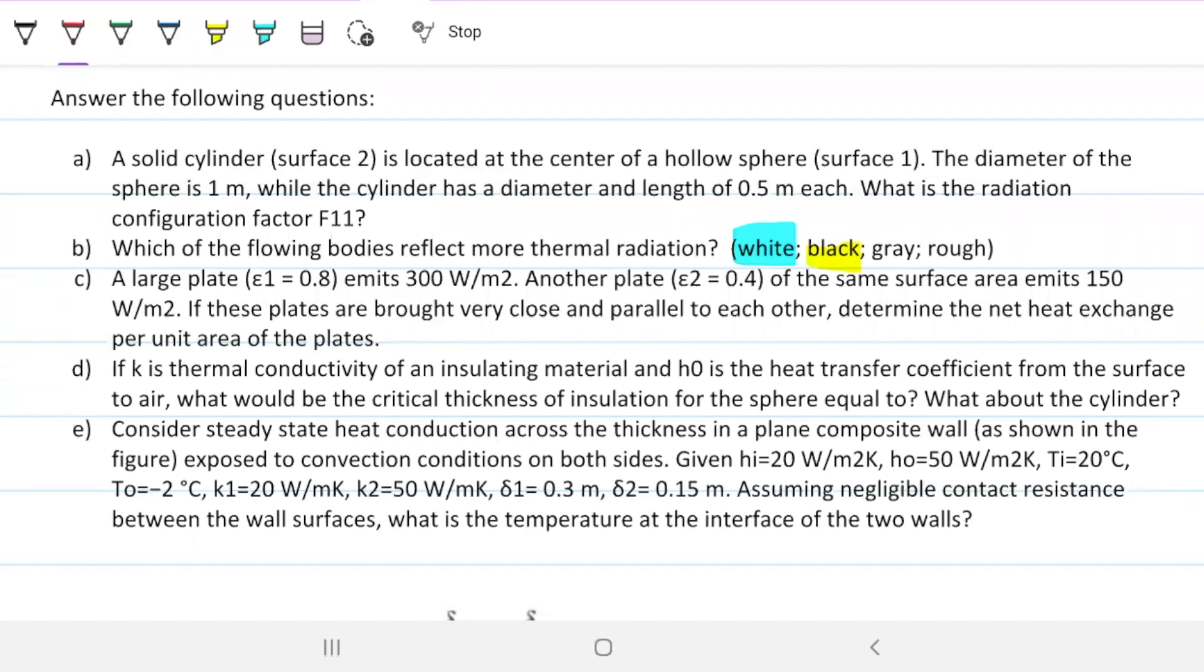A large plate with emissivity of 80% emits 300 watts per meter square. Another plate with emissivity of 40% of the same surface area emits 150 watts per meter square. If these plates are brought very close and parallel to each other, determine the net heat exchange per unit area of the plates.